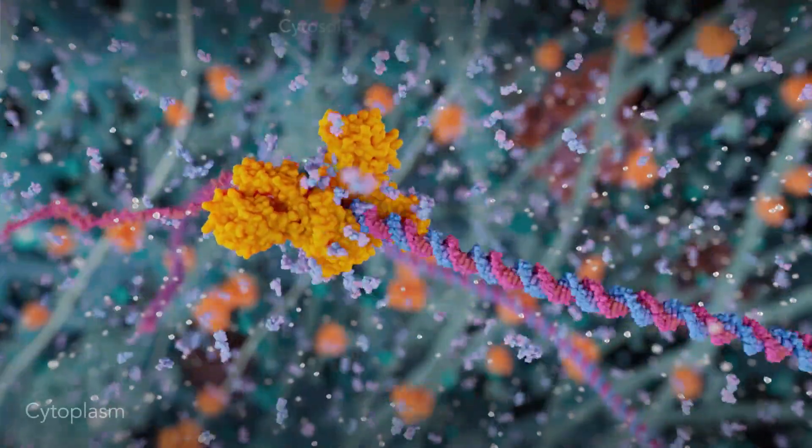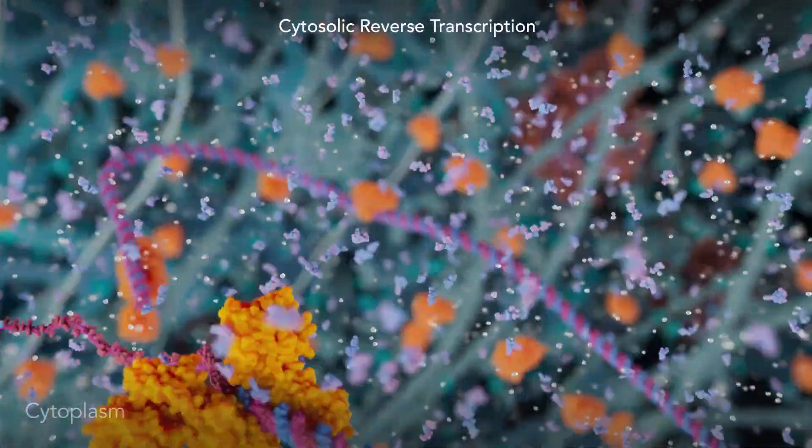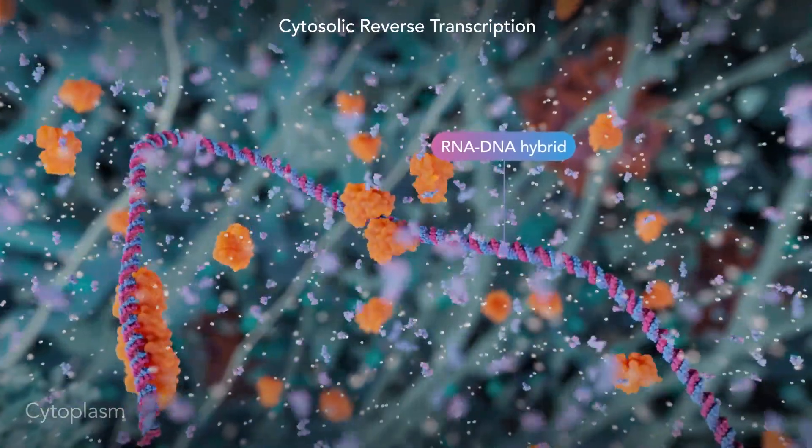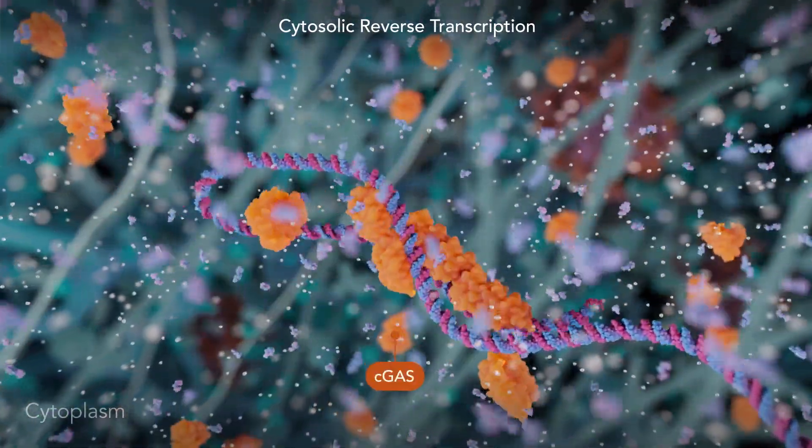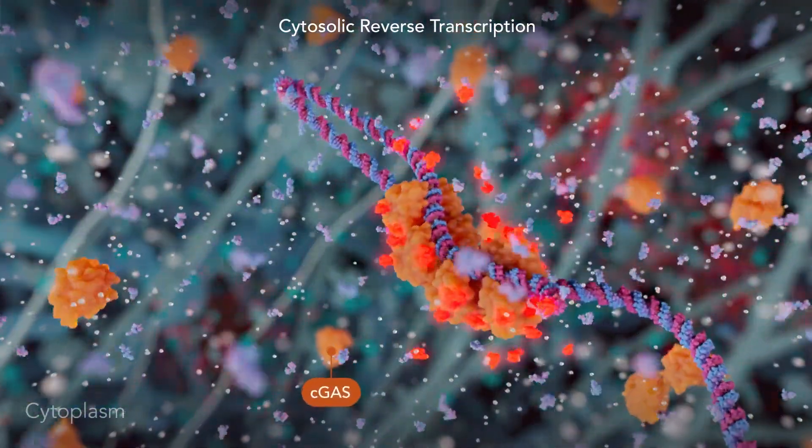Reverse transcription can also happen in the cytoplasm, where it creates RNA-DNA hybrids, aberrant products which can trigger inflammation.